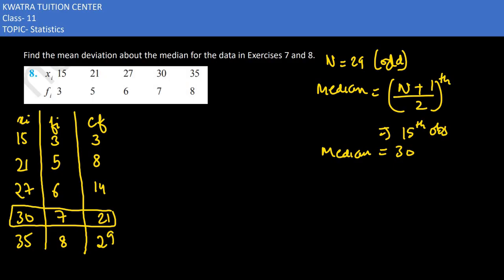Okay, so median here in this case is 30. So our next table is mean deviation. So what do we need to do? XI minus M, subtract and we need to take the mod. So 15 minus 30 would be minus 15 then plus 15. 21 minus 30 would be minus 9, so positive 9. 27 minus 30 would be minus 3, so positive 3. 30 minus 30 would be 0. 35 minus 30 would be 5.